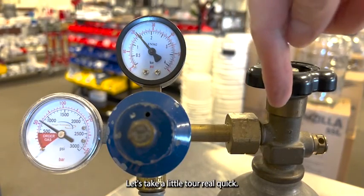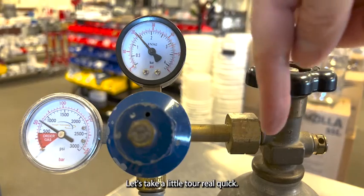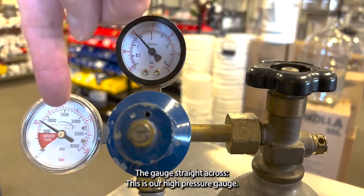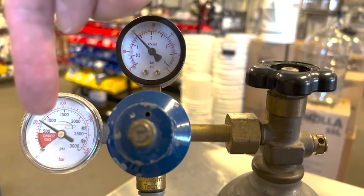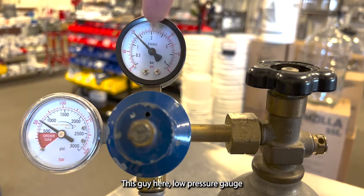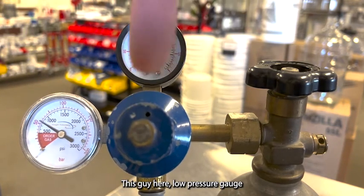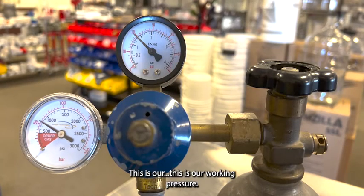Let's take a little tour real quick. The gauge straight across, this is our high pressure gauge, this is our tank gauge. This guy here, low pressure gauge, runs this direction. This is our working pressure.